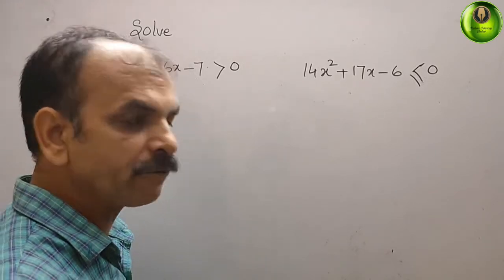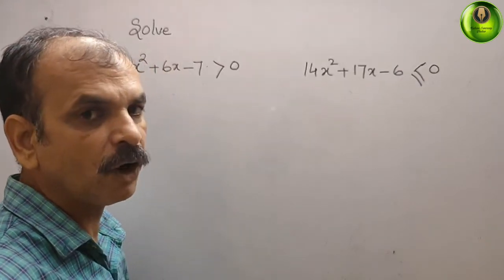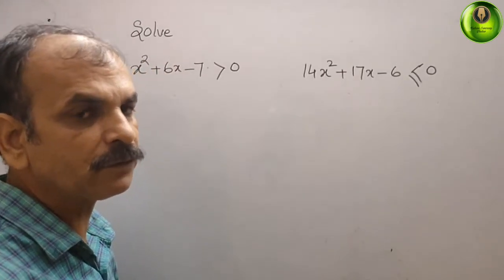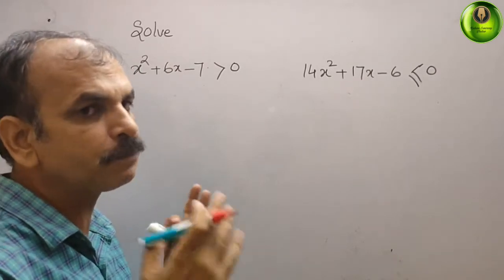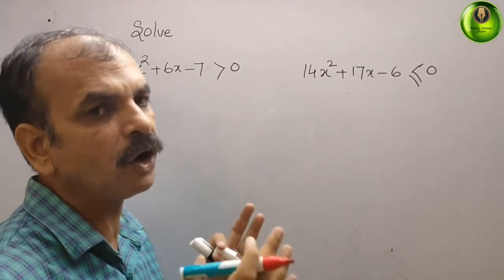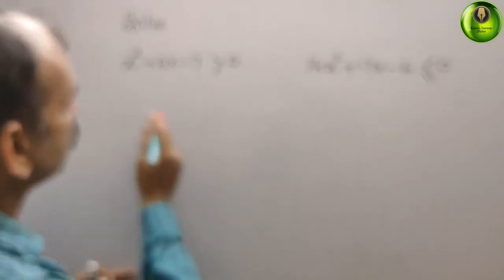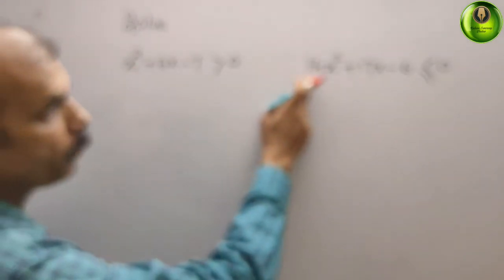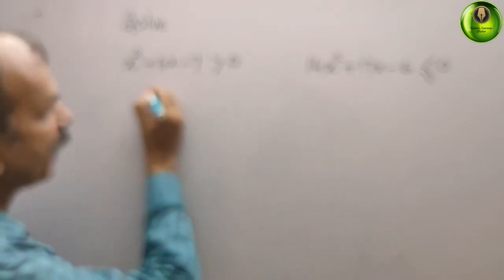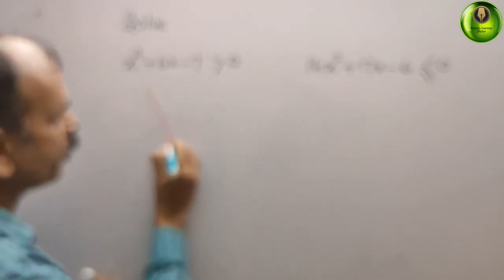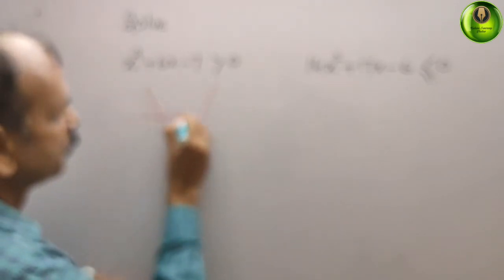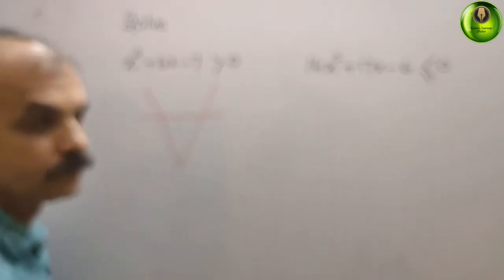For inequality equations, the first step is to check whether the coefficient of x² is positive or negative. Here, the coefficient of x² is positive in the first equation, and also positive in the second. That means both parabolas open upward, giving us a minimum point.